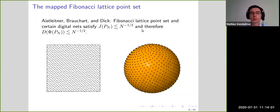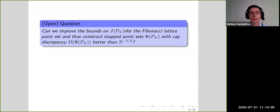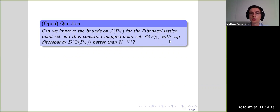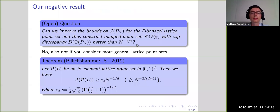They proved this upper bound but asked whether one can improve the bounds — perhaps to n to the minus 2/3 for the Fibonacci lattice or digital nets — and thus achieve mapped point sets with spherical cap discrepancy better than n to the minus 1/2. We looked at this question and the answer is that this is not possible.